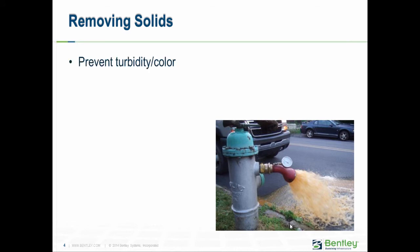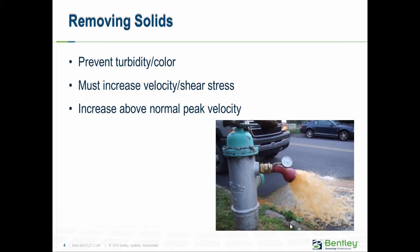Removing solids in the distribution system — in this case, we're trying to prevent turbidity or color. We don't want the water to be cloudy or have color. The key is velocity, or really shear stress. You want high shear stress along the pipe wall, which is going to stir up solids and move them out of the system. The key goal is to increase velocity above normal conditions — for example, if solids settle at 0.5 feet per second, you need to get well above that. You also want to flush with clean water behind you, bringing water from a part of the system that is of relatively good quality.